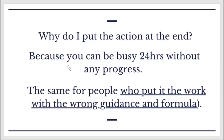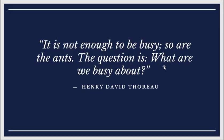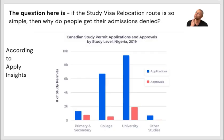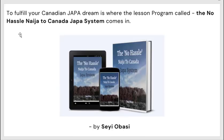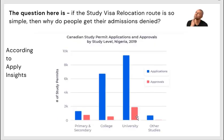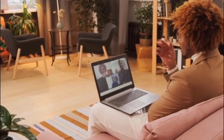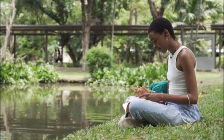The reversal of this is why a lot of people's applications are denied — no right formula, no right guidance, and no action. But why is action last? Because you can be busy 24 hours without progress. The same goes for people who put in work with the wrong guidance and formula. Henry David said it is not enough to be busy — the question is what are we busy about? Are you using the wrong formula and wrong guidance?